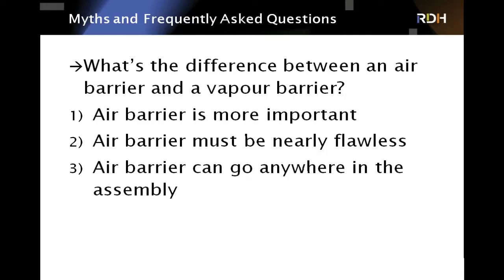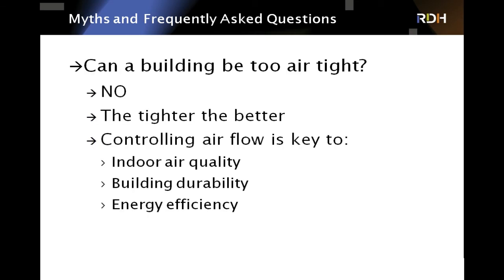Going back to our original questions: What's the difference between an air barrier and a vapor barrier? An air barrier is more important, needs to be nearly flawless — gaps and holes in a vapor barrier are not a big deal, but in an air barrier they're a very big deal. An air barrier can go anywhere in the assembly; in fact we now encourage exterior air barriers. A vapor barrier must be on the warm side — the interior in our climate. Can a building be too airtight? No — the tighter the better, and that's where mechanical ventilation comes in, because you want to know how much air is coming in and the quality of that air.